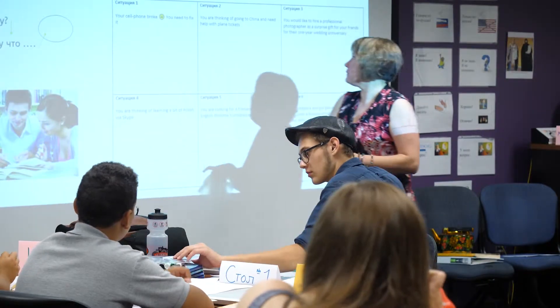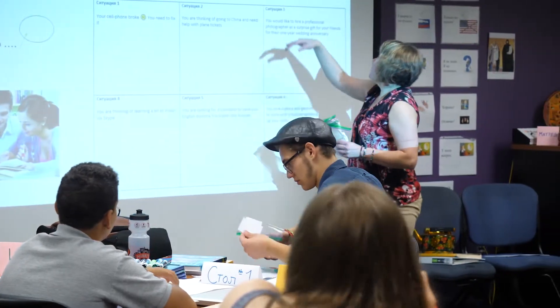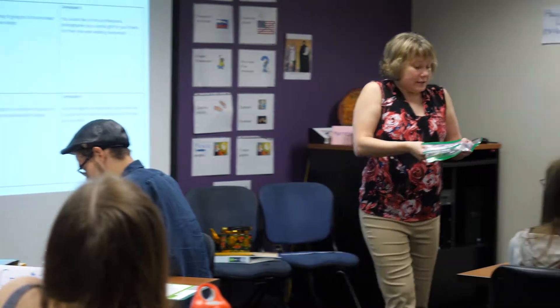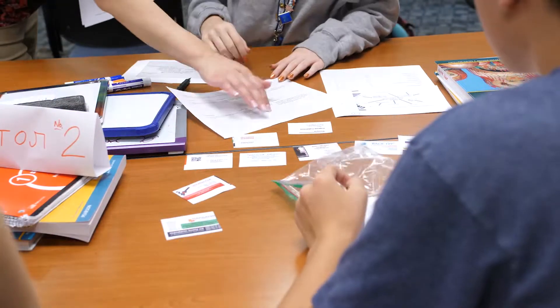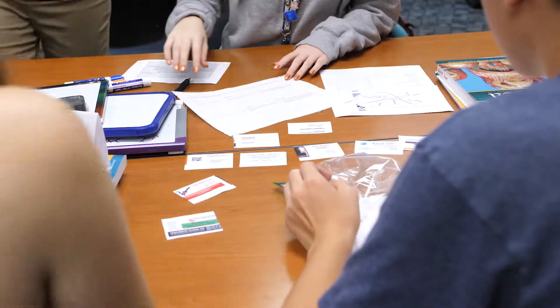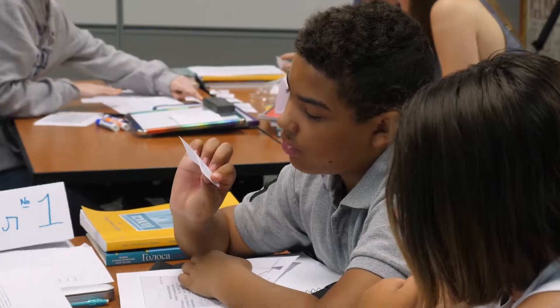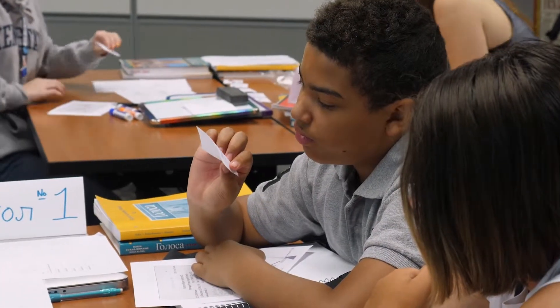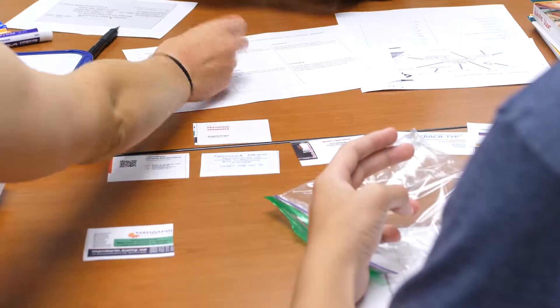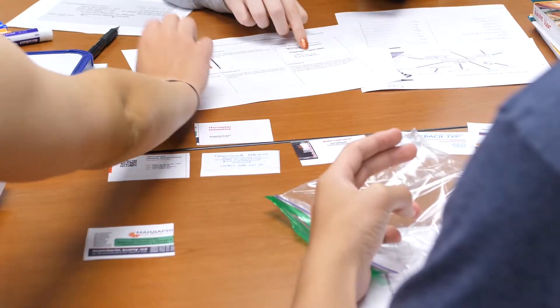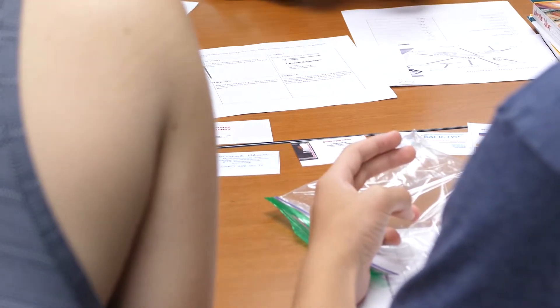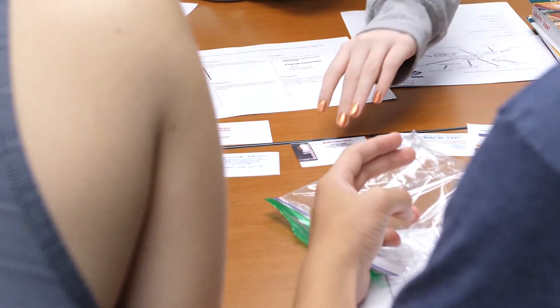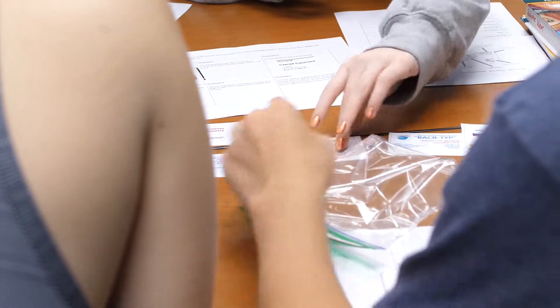Students are now presented with an interpretive activity, in which they connect each Russian business card with an appropriate situation. Students are given ten business cards but only six situations. The relevant grammatical structures — why and because — are provided on the handout so that students can justify their choices.